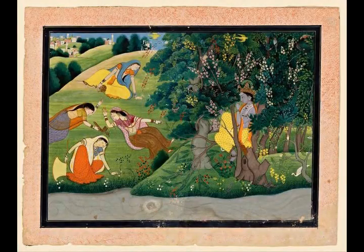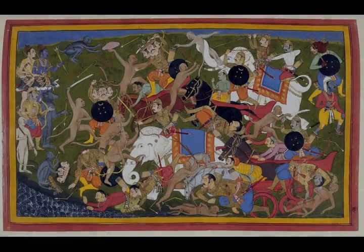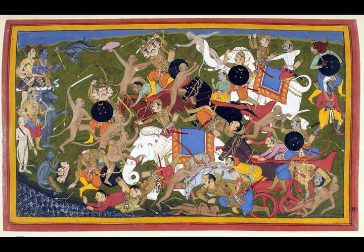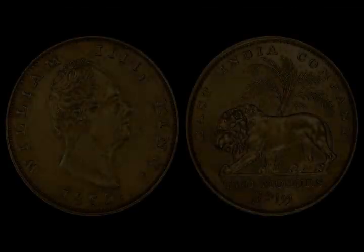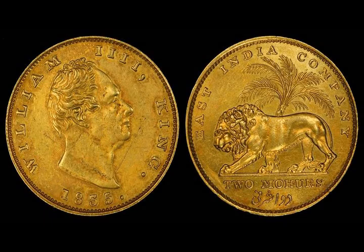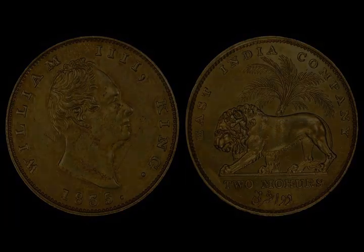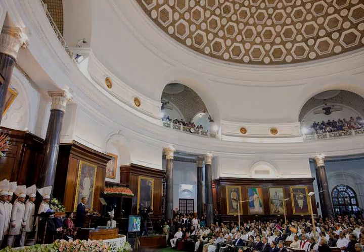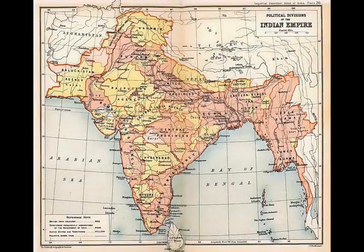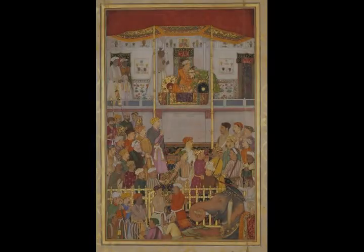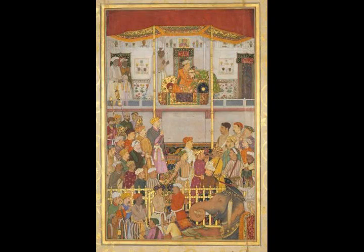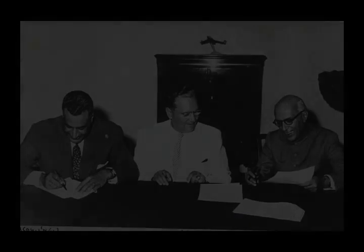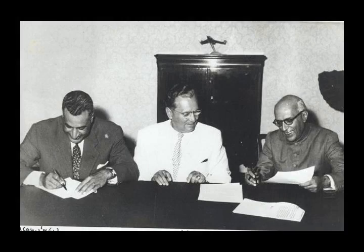The Government of India comprises three branches. In the executive branch, the President of India is the ceremonial head of state, elected indirectly for a five-year term by an electoral college comprising members of national and state legislatures. The Prime Minister of India is the head of government and exercises most executive power. Appointed by the President, the Prime Minister is by convention supported by the party or political alliance having a majority of seats in the lower house of parliament. The Executive of the Indian Government consists of the President, the Vice President, and the Union Council of Ministers, with the Cabinet being its Executive Committee, headed by the Prime Minister. In the Indian parliamentary system, the executive is subordinate to the legislature, and the Prime Minister and their council are directly responsible to the lower house of the parliament.